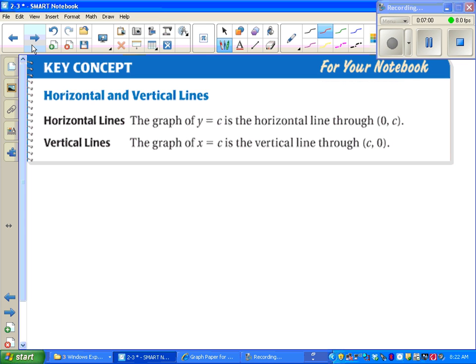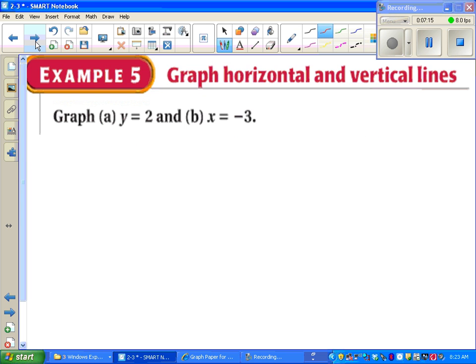Kind of a side thought, graphing horizontal and vertical lines. If you've got y equals something, that's just a line that's flat through that number. X equals c, or c can be any number, is a straight up and down line, right through the dot where x equals whatever c is. We'll see that in our last example.